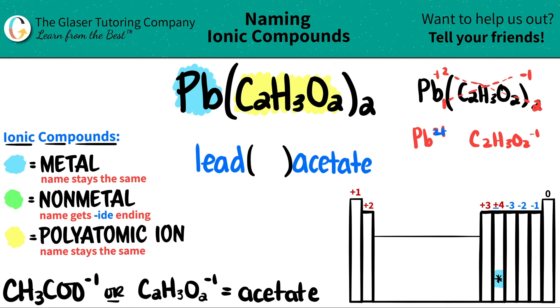And the charge of the lead was a two. So that's what I'm going to put here, two. And now we are done. So Pb(C2H3O2)2 is just lead(II) acetate. And there you guys go.